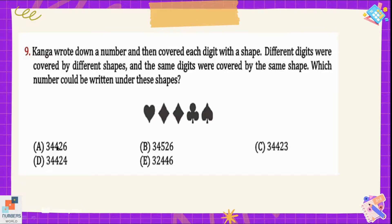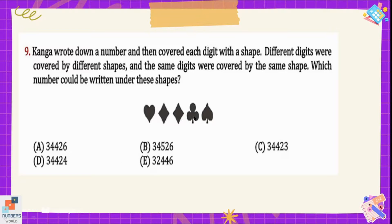Option B is 3-4-5-2-6, which is incorrect because the second and third numbers (diamonds) should be the same but they are different. Option C is 3-4-4-2-3 — here the first and last numbers should be different, but in option C they repeat (heart and spade have two different values but C repeats them). Option D is 3-4-4-2-4, which is wrong because four appears three times. Option E is also incorrect because diamond and spade would have different numbers but the third and fourth are the same. So option A is the only correct answer.